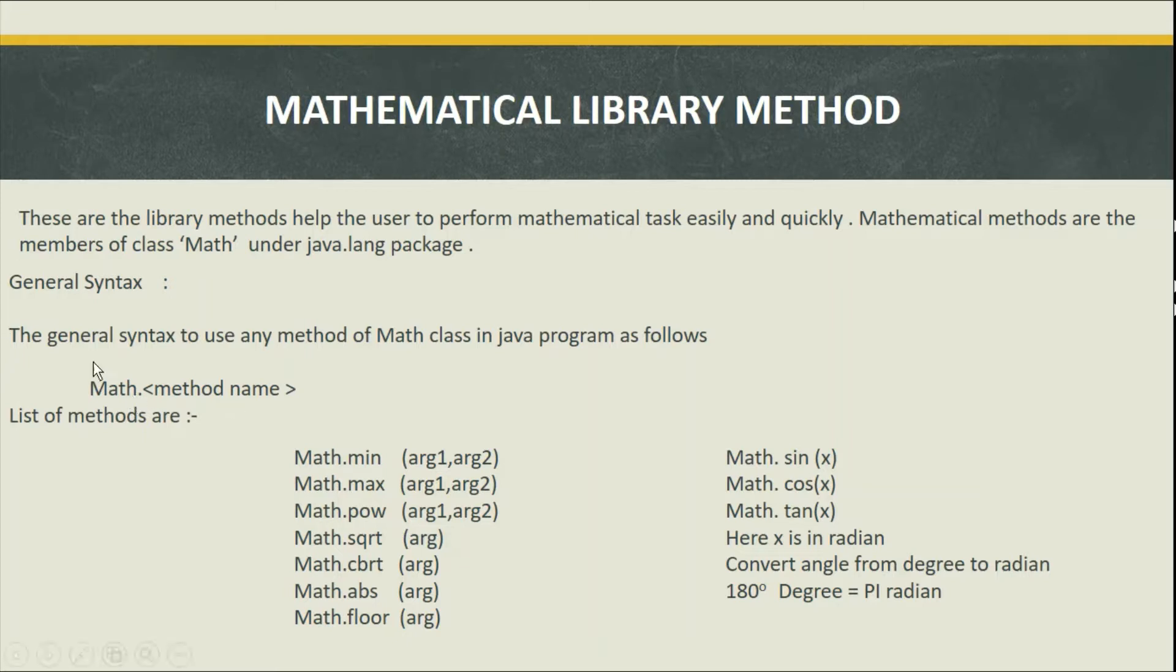To use the method in a program, first we have to use the Math class: Math dot and method name. In parenthesis we have to pass the argument. Math.min, Math.max, Math.pow.